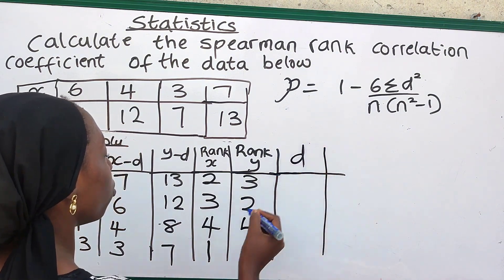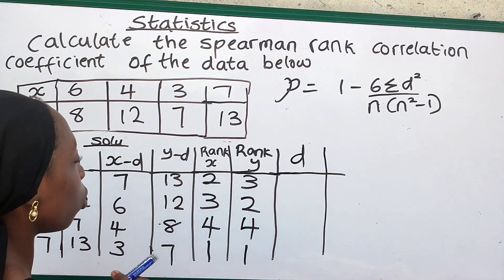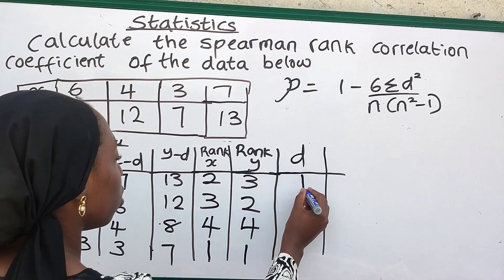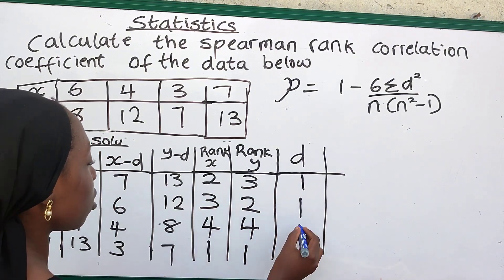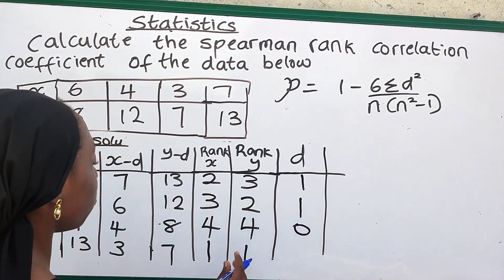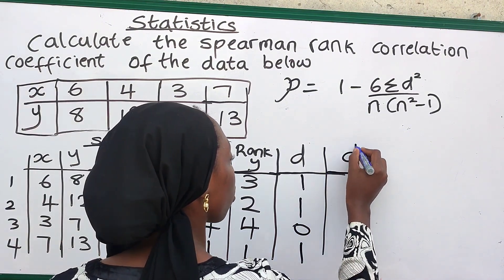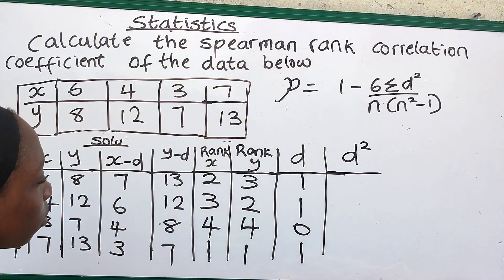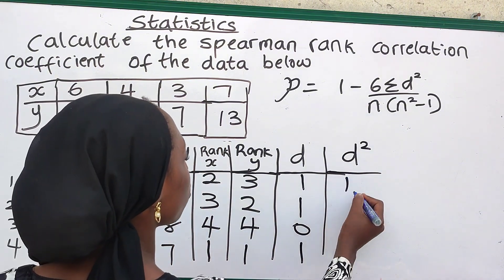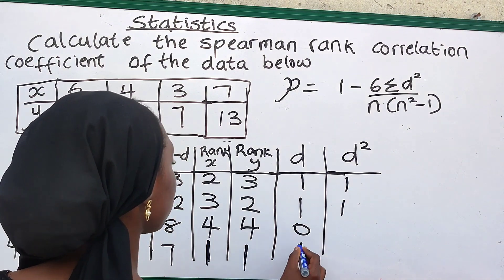After that we solve for our difference D between the two ranks. The difference between rank 2 and rank 3 is 1. The difference between rank 3 and rank 2 is 1. The difference between rank 4 and rank 4 is 0. And the difference between rank 1 and rank 1 is 0. Then we find our D squared values: 1, 1, 0, 0.